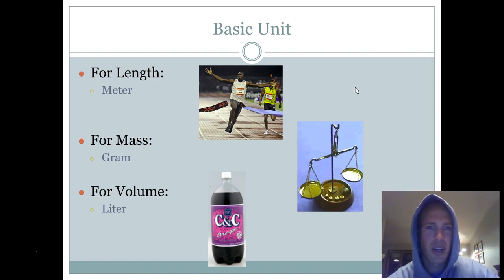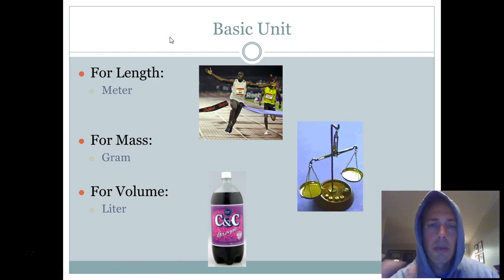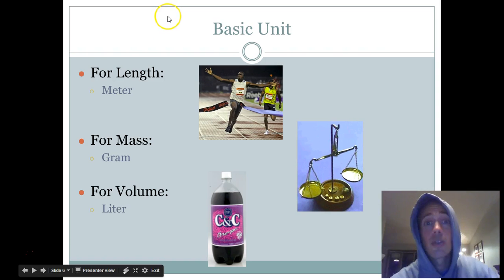So metric system is probably the way to go. It's the easiest way for scientists, at least, to measure things. Now, when you're in the kitchen, I think it's kind of cool to use the imperial system. It's a good bit of American folklore. So some things I need you to remember. I do need you to know what the basic unit in the metric measurement system is for length, mass, and volume.